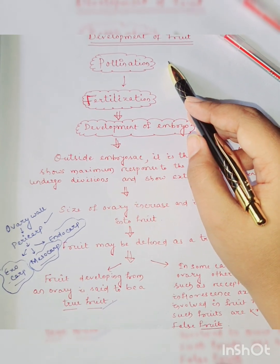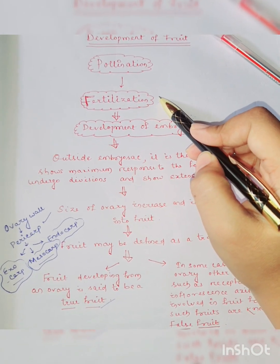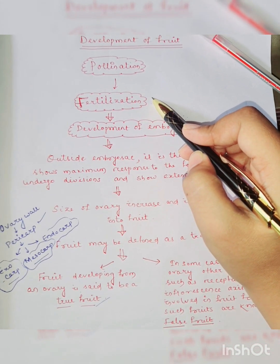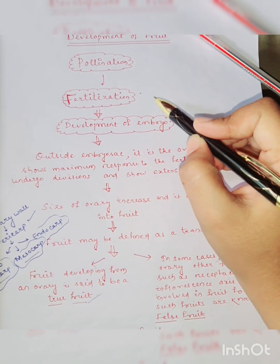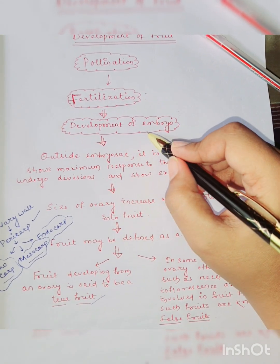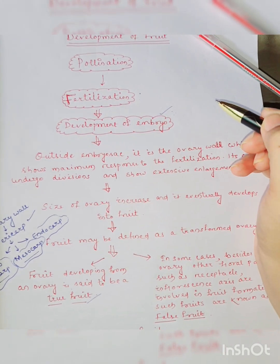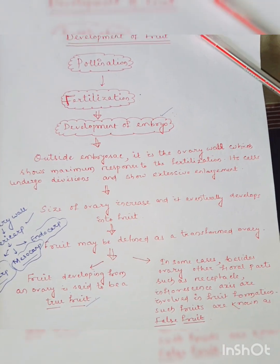After pollination, fertilization will occur, that means the fusion of male gamete and female gamete. The fusion product is zygote and zygote finally develops into an embryo.